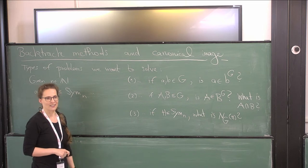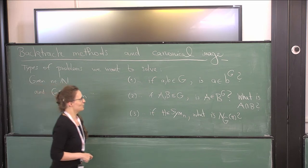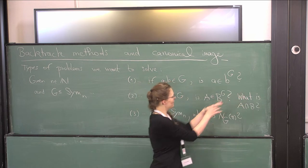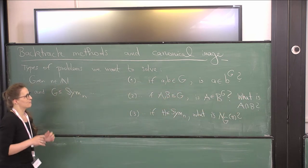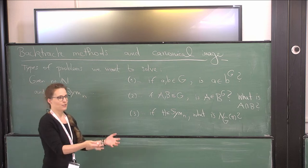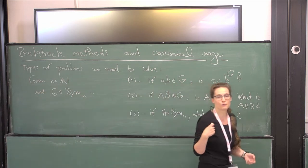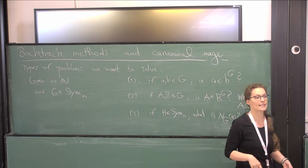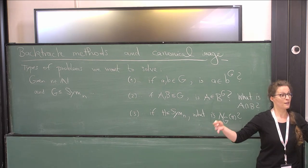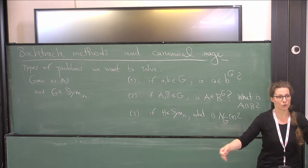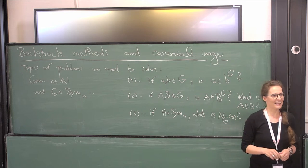And now we enter the Champions League: normalizer computation. So if you have two subgroups, you want to calculate the normalizer of one subgroup in the other. That's hard. Group intersection is somewhere in the middle; there are also conjugacy problems and calculating various stabilizers of objects.